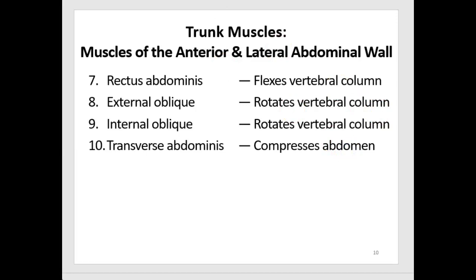The rectus abdominis helps us do sit-ups — what we're really doing is flexing our vertebral column. Both the external and internal oblique help to rotate the vertebral column. And the transverse abdominis, whose main role is to compress the abdomen.